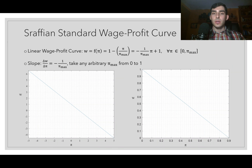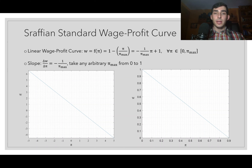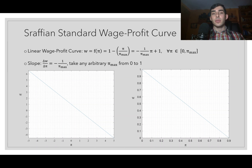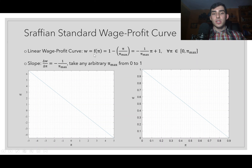We can now apply these concepts to a question within classical political economy — specifically the Srafian system. Piero Sraffa was a highly prominent economist who, while not strictly of the classical tradition, did important work based on it. His widely respected book, 'Production of Commodities by Means of Commodities,' defines a system of prices of production where the standard wage-profit curve is linear.